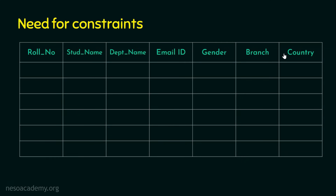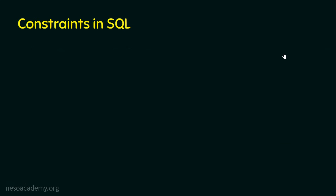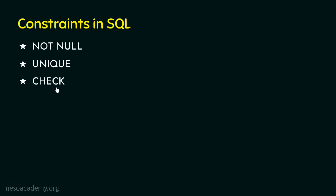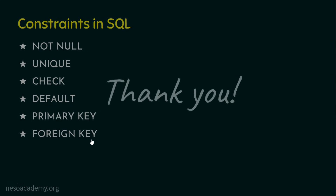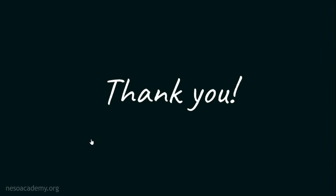Now we are clear about constraints and how they are achieved in SQL. We have basically six different types of constraints: the first one is NOT NULL, the second one is UNIQUE, the third one is CHECK, the fourth one is DEFAULT, the fifth one is PRIMARY KEY, and the last one is FOREIGN KEY. In the next presentation, we will see some solved example queries that involve these constraints. Thank you for watching.